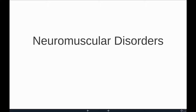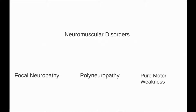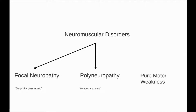Neuromuscular disorders. In general, when a patient presents with a neuromuscular disorder, there are three general pictures that you'll see. The first is a focal neuropathy — for example, a patient complaining that their pinky goes numb. The second is a polyneuropathy, where a patient says their toes are numb and may have a little bit of hyporeflexia in the Achilles or numb fingers.